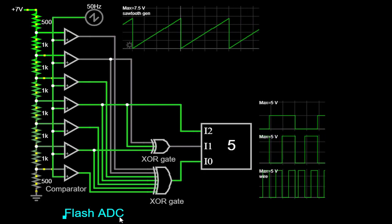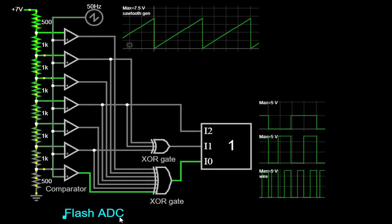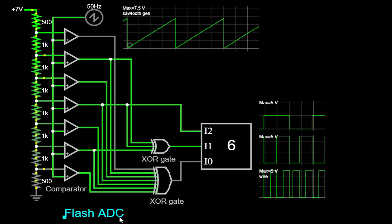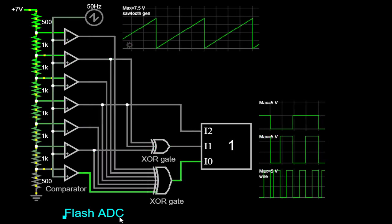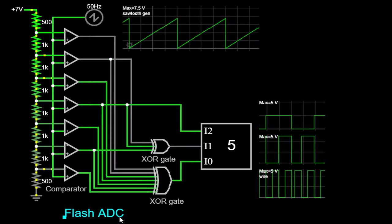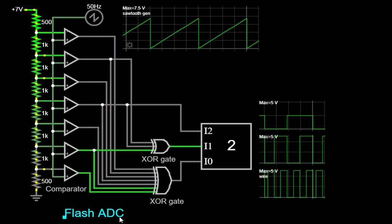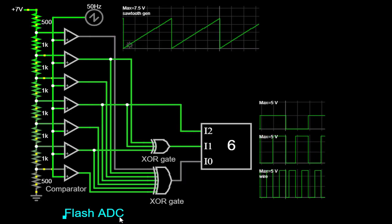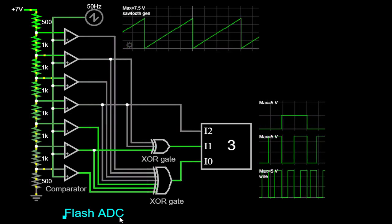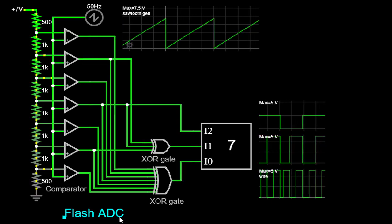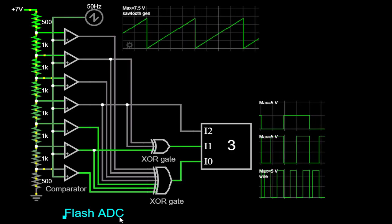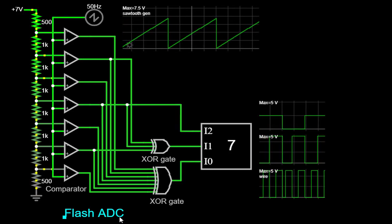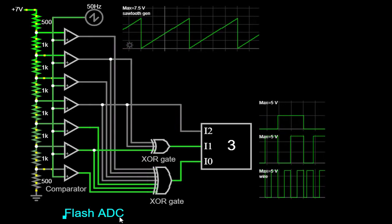It's important to note that Flash ADCs typically require a larger number of comparators compared to other ADC architectures to achieve high resolution. The number of comparators is directly proportional to the desired resolution of the ADC. For example, an 8-bit Flash ADC would require 2 to the power of 8 equals 256 comparators. As a result, the implementation complexity and power consumption can increase significantly with higher resolutions.